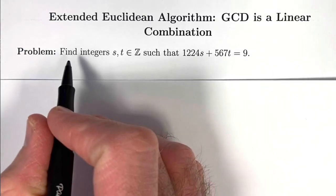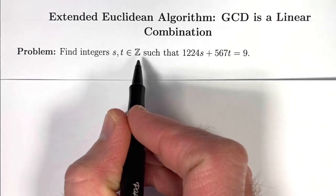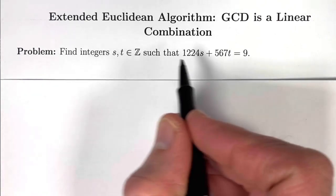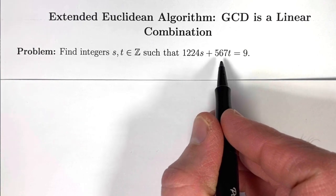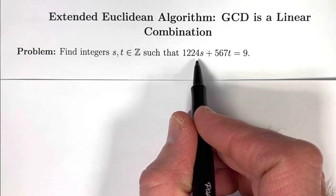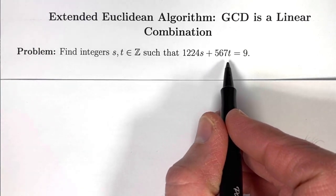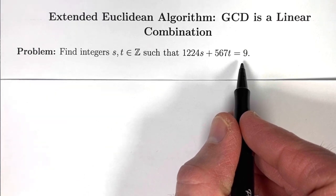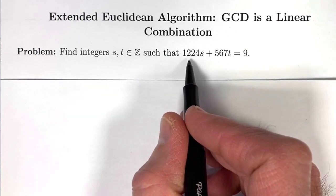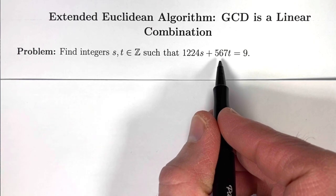Here's our problem statement. Find integers s and t that are in Z, the set of integers, such that this linear combination 1224s plus 567t equals 9. It turns out that 9 is the greatest common divisor of 1224 and 567.